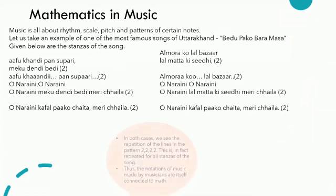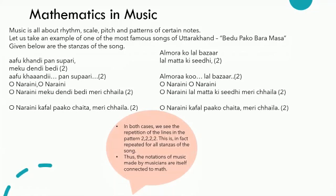One thing we can observe in both cases is that each line is repeated twice. That is the pattern two, two, two, two. This is in fact repeated for all the stanzas of the song. We can say that the arithmetic progression two, two, two, two is common for all the stanzas of the song.